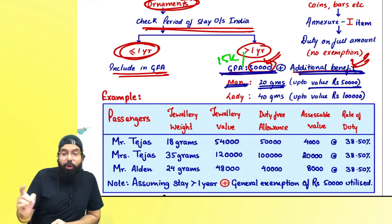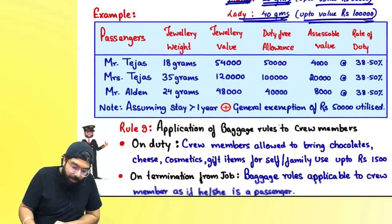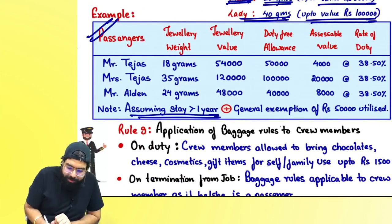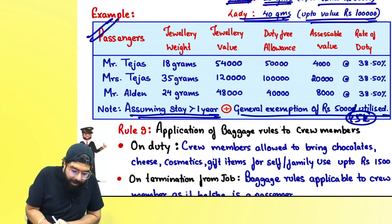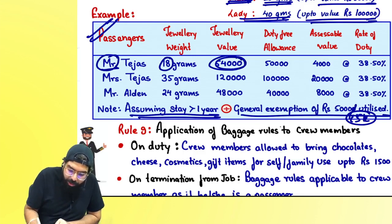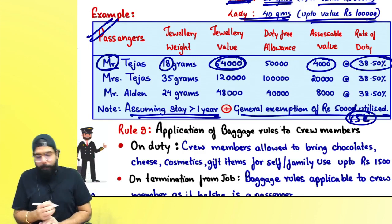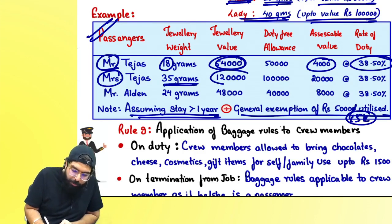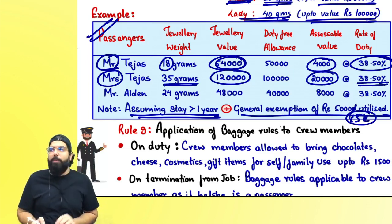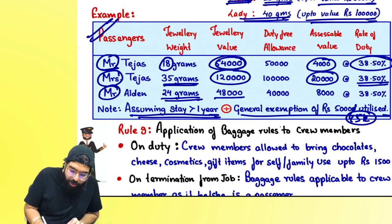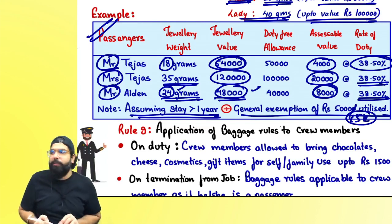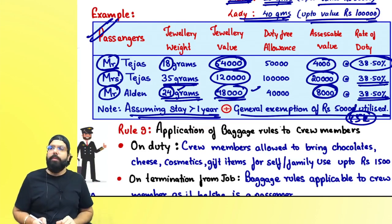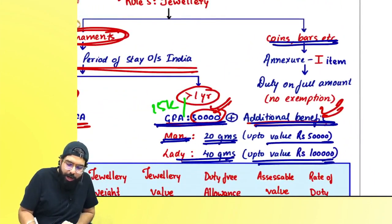For the additional jewelry benefit: if you are a man, 20 grams up to 50,000 is allowed; women are allowed 40 grams up to 1 lakh. For example in the exam: if Mr. Tejas brings 18 grams worth 54,000 and GFA of 50,000 is already utilized, 4,000 is extra and 38.5% duty is paid. Mrs. Tejas: 40 grams allowed up to 1 lakh, 20,000 extra means 38.5% duty on 20,000. Mr. Elden: 24 grams worth 48,000; at 2,000 per gram, 4 extra grams = 8,000; pay 38.5% on 8,000.